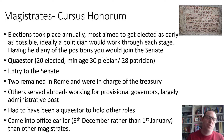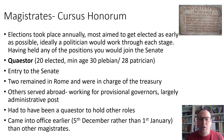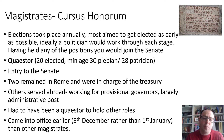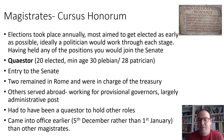The magistrates are the different positions on the cursus honorum. Elections take place for these positions annually. Most aim to get elected as early as possible, and each position has an age requirement. Ideally a politician would work through each stage — some steps are compulsory, some aren't — and having held any of these positions, they would join the Senate. The lowest magistrate position is the quaestor. Twenty were elected annually. You had to be a minimum age of 30 if you were plebeian, or 28 if patrician. It gives you entry into the Senate. Two quaestors remained in Rome in charge of the treasury; others served abroad working for provincial governors. Largely these were administrative posts, very rarely military.